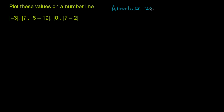Absolute value — there are two ways to think about it. The first way is: how far is something from 0? I'm first going to plot the numbers inside the absolute value sign on a number line, and then we're going to take the absolute value and plot those, just like they're asking us to do.